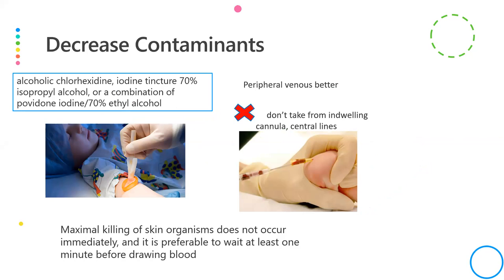Contaminants are usually skin commensals such as Staphylococcus epidermidis. To prevent contamination, use an antiseptic — alcoholic chlorhexidine, tincture iodine, isopropyl alcohol, or a combination — and follow aseptic precautions. Most importantly, wait for the antiseptic to dry before taking the sample. Ideally, collect from a peripheral venous puncture; do not collect from an indwelling cannula, UAC, or UVC, which are prone to contamination.